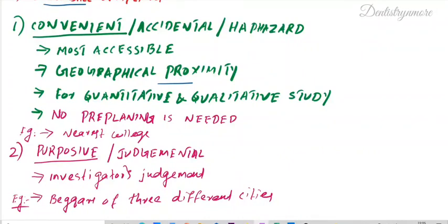It is called accidental because elements may be selected simply because they happen to be situated spatially or administratively near where the researcher is conducting data collection. For example, if I work in a college and want to study dental students, I select students from my college because it is easily accessible and convenient for me.